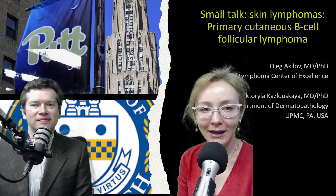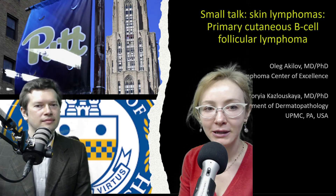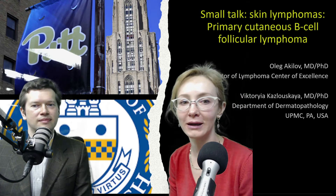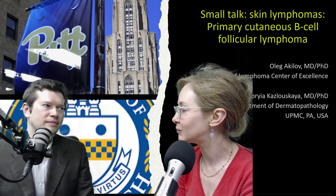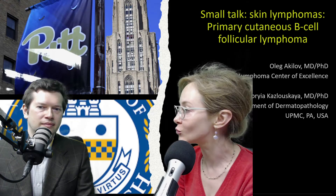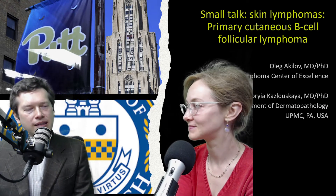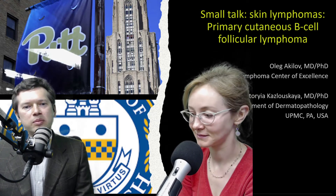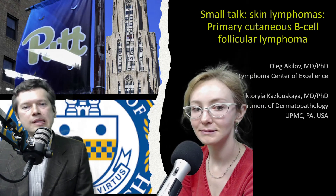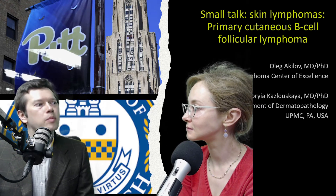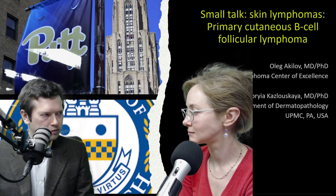In the second part of the lecture, I would like to introduce Oleg Akilov, MD, PhD, and director of our lymphoma center of excellence. I'll ask a couple of questions about primary cutaneous B-cell lymphomas. How often do you see those? Well, B-cell lymphoma is not that common in our center — probably 10 to 15 percent of patients present with B-cell lymphoma among all cutaneous lymphomas. The majority of those patients have marginal zone, probably 25 to 30 percent. We have a decent number of follicular center lymphoma, and a really small number of diffuse large B-cell lymphomas.